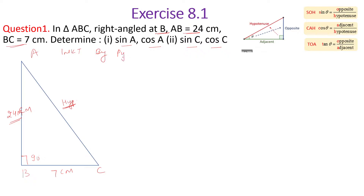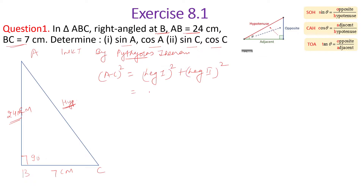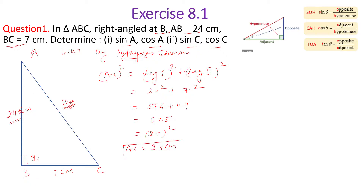In the triangle, by the Pythagorean theorem, the hypotenuse squared equals the sum of the squares of the two legs. So AC squared equals AB squared plus BC squared, which is 24 squared plus 7 squared. That gives 576 plus 49, which equals 625. Since 625 is the square of 25, AC equals 25 centimeters.